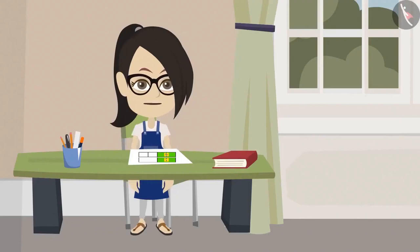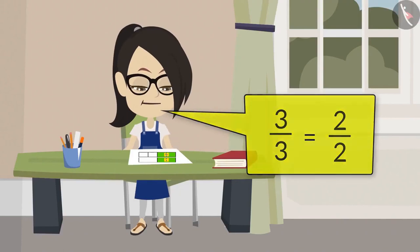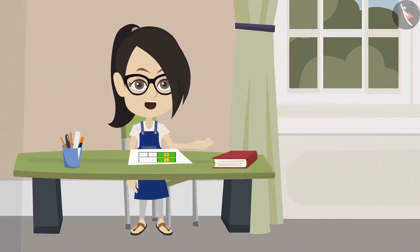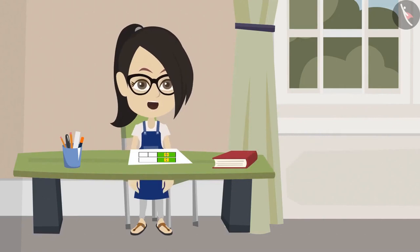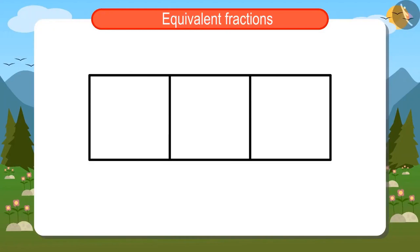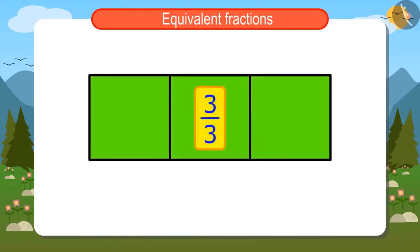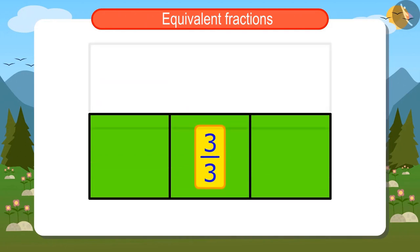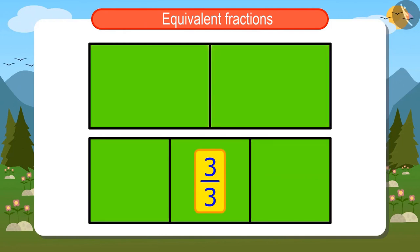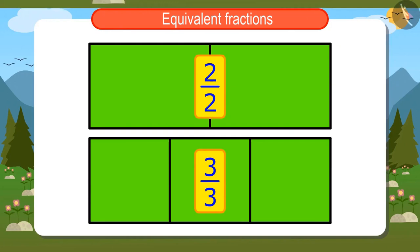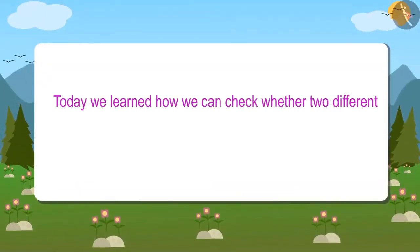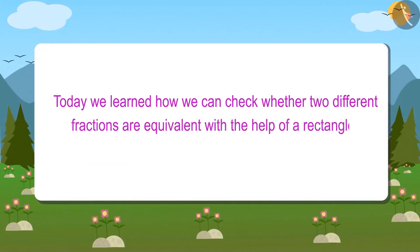Just like this, we also got to know that 3 upon 3 and 2 upon 2 are equal. We should check their equivalence the same way. For 3 upon 3, I have to divide this rectangle into 3 equal parts. Now 3 of these 3 parts will represent 3 upon 3. To show 2 upon 2, I will make 2 equal parts of this rectangle. These two parts show 2 upon 2. Looking at both, we see that 2 upon 2 and 3 upon 3 are equivalent because both are showing the same quantities. Now I understand how these two fractions are equivalent. Today we learned how, with the help of a rectangle, you can check whether fractions are equivalent or not.